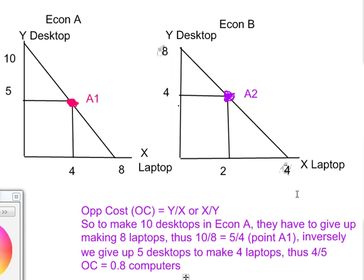But to make ten desktops in econ A, they have to give up making eight laptops. Now in order to get the comparative advantage, we have to understand who has a lower opportunity cost. So what does opportunity cost mean? Opportunity cost is what do you give up to get a benefit. In other words, in order for me to make ten desktops, I have to give up eight laptops. So in the case of desktop, the opportunity cost will be ten divided by eight, or Y over X, or X over Y.